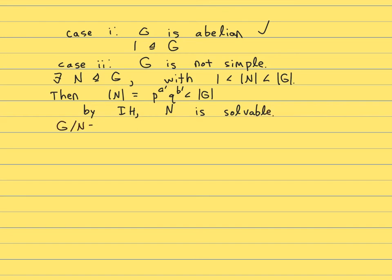Similarly, G mod N is P to the A minus A prime Q to the B minus B prime in size. Again, this is going to have to be smaller than G, so by induction hypothesis G mod N is also solvable. So you found a normal subgroup such that the normal subgroup and the quotient are both solvable. What we just learned about solvable groups is that if that happens, then the overall group is solvable.